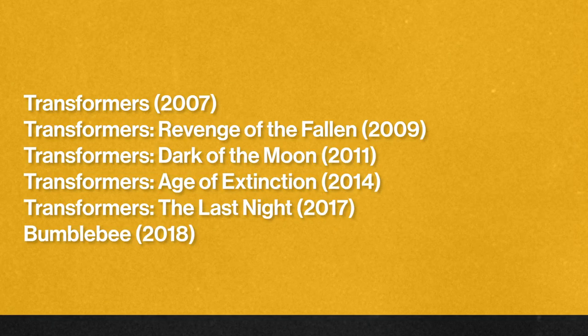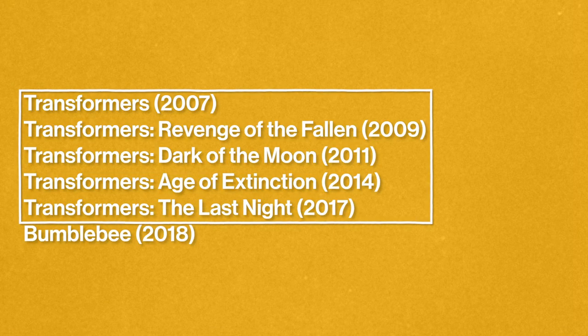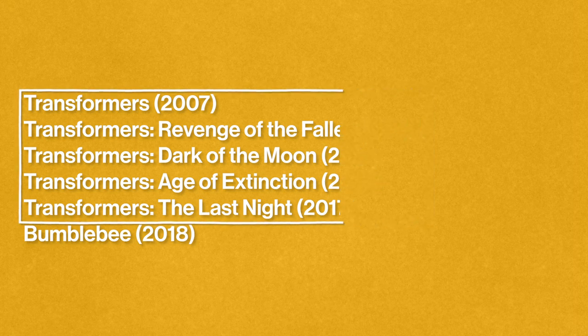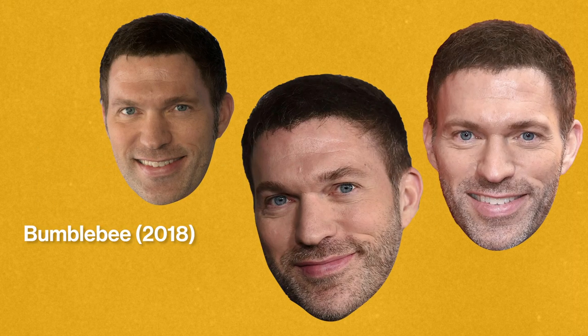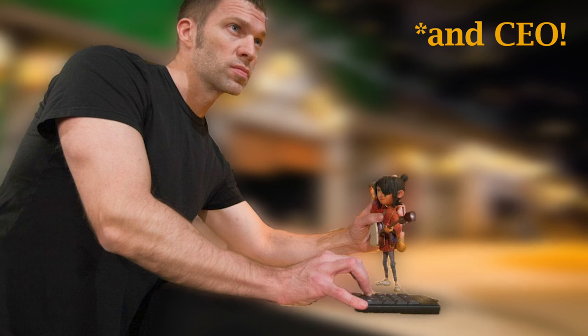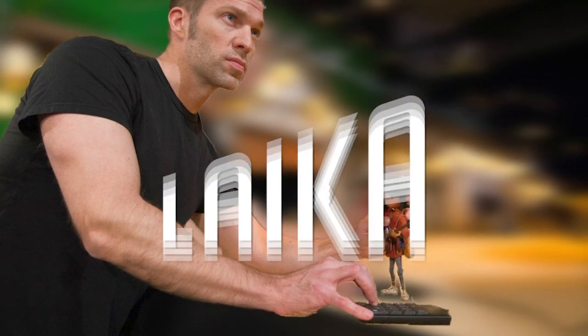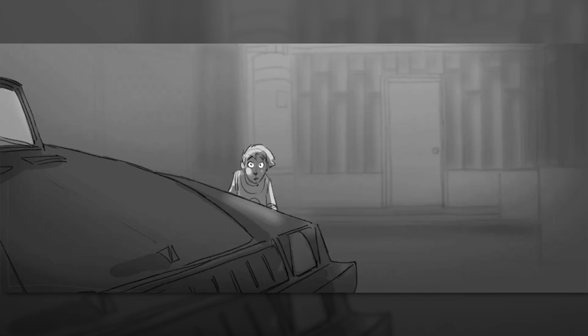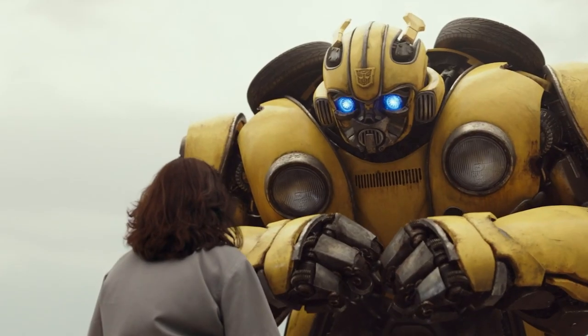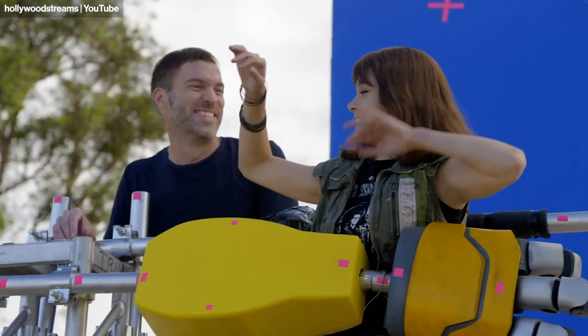Now back to Bumblebee. Unlike the main Transformers series, which was directed by Michael Bay, Bumblebee was directed by Travis Knight, who previously served as a lead animator at Laika and directed 2016's Kubo and the Two Strings. Bumblebee marked Knight's first venture outside the world of stop motion, but he took his animation roots with him, even employing storyboarders from Laika to make sure the visual storytelling of animation would translate into his first live action film.